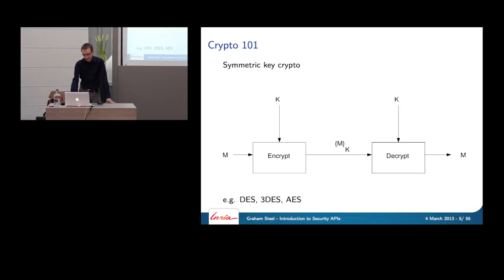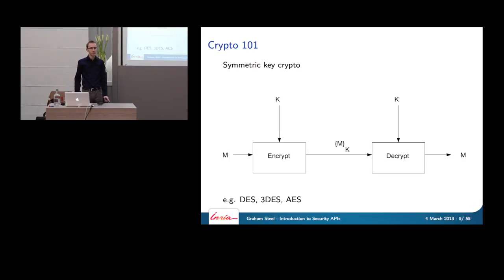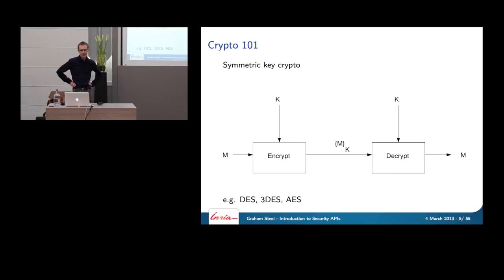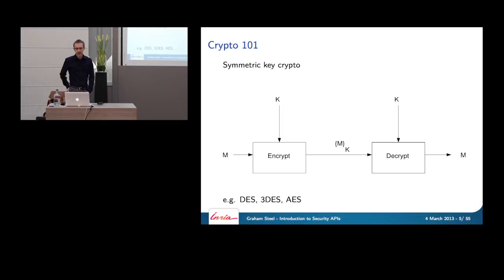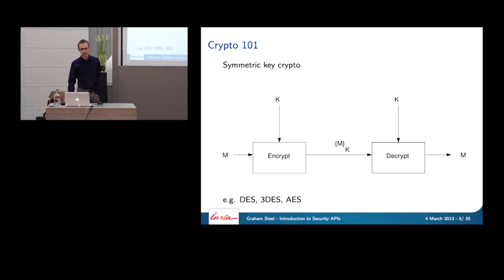There's going to be more discussion of crypto tomorrow, but just to get everyone up to speed: the only thing you need to understand is symmetric key crypto. You encrypt a message M with a key K to get a ciphertext, and the only way to decrypt is if you also have the key K — then you get M back. For today's talk we're ignoring implementation issues like padding oracles — just basic crypto to illustrate API design.